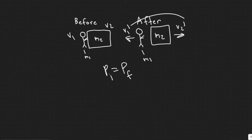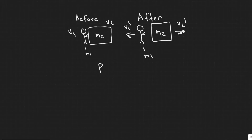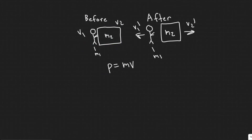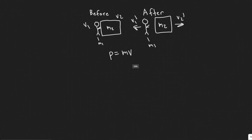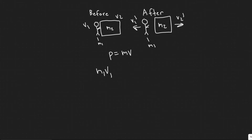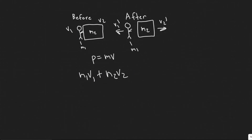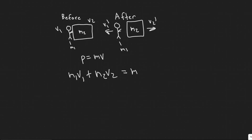Before the push, the momentum has to equal the momentum after because momentum is conserved. The formula for momentum is P equals MV. We look at our isolated system — the astronaut and the space capsule — and add up the momentum before, setting it equal to after. So M1V1 plus M2V2 equals M1V1 prime plus M2V2 prime. The masses stay the same; only the velocities change.